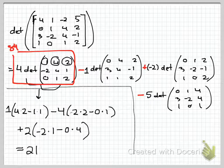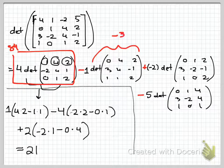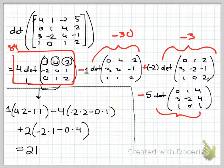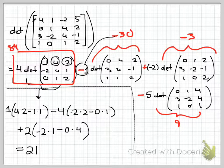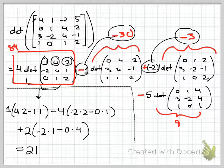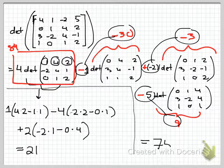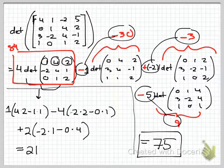Now I'm going to alternate my sign: minus 4. Moving on to 4 — eliminate the row and column in which that sits and take the 2 by 2 determinant, which gives negative 2 times 2 minus 0 times 1. Then finally move to the last entry in that top row, alternate the sign, I have a 2 — eliminate the row and column and take the 2 by 2 determinant: negative 2 times 1 minus 0 times 4. If you do all the math, this comes out to equal 21, so this block equals 84.